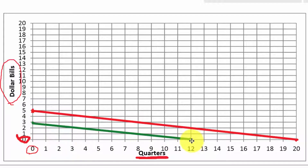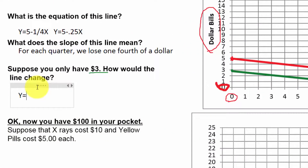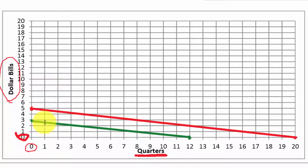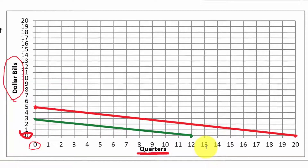So we write this equation as y equals three minus one-quarter x. The slope doesn't change because the relationship between quarters and dollar bills has not changed — the opportunity cost is still one-fourth of a dollar bill for each quarter. The y-intercept has gone down, which is typical of any budget line: our opportunities are lower because we have fewer resources with which to operate.